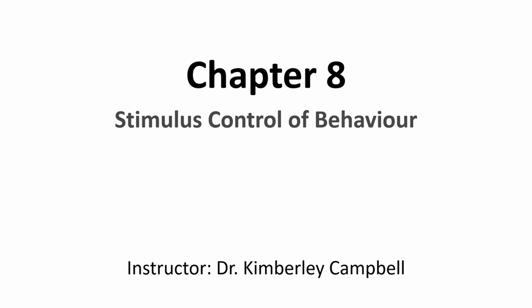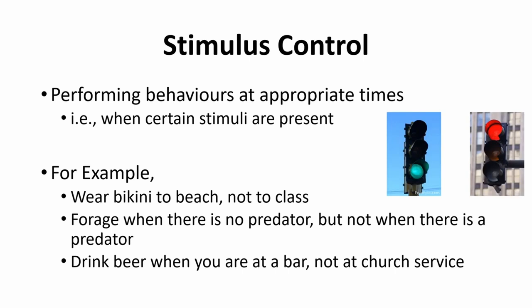We're going to start today by talking about some of the basics of stimulus control. As the name implies, the stimulus control of behavior is when different behaviors fall under the control of different stimuli. Basically, you perform particular behaviors at appropriate times — when a particular discriminative stimulus tells you that it's appropriate to do so, indicating that doing that behavior now would be reinforced.